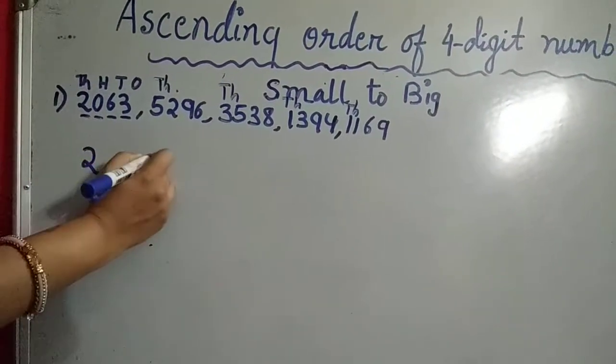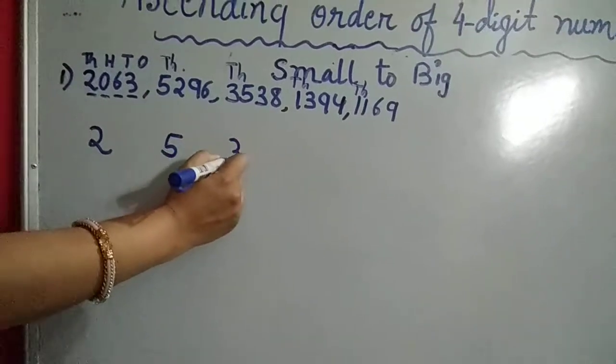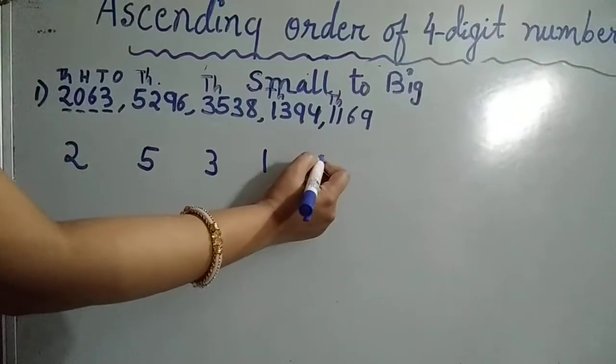Over here we will write two, here five, here three, here one, and also over here one.